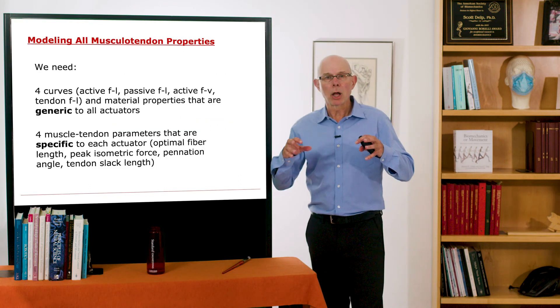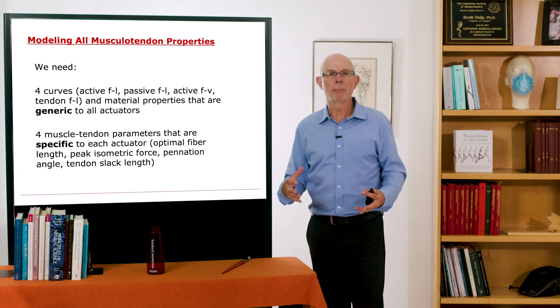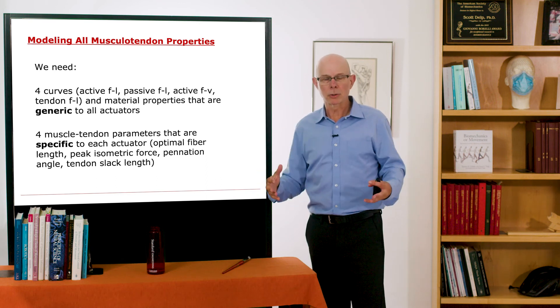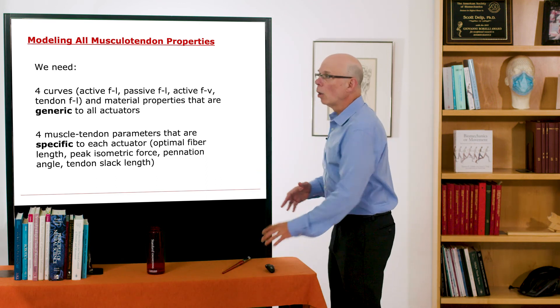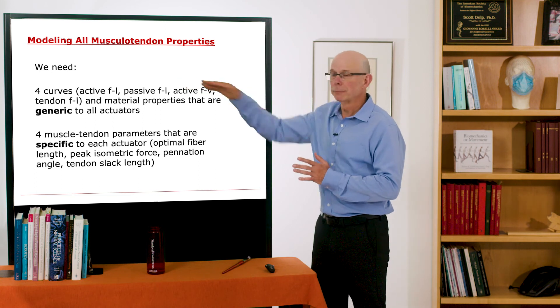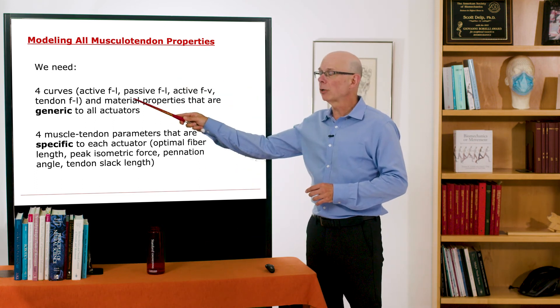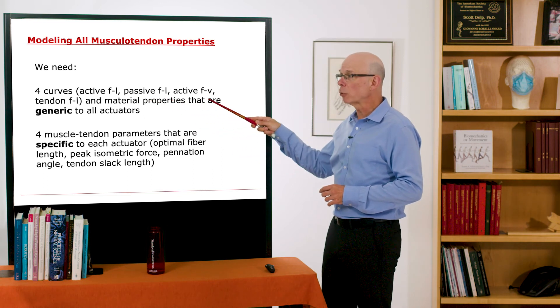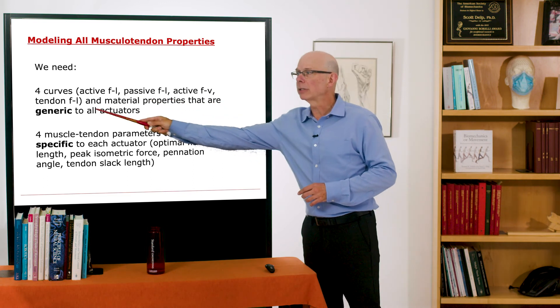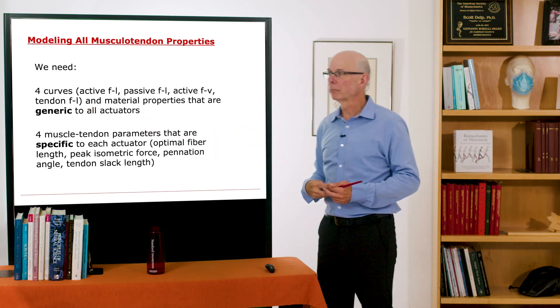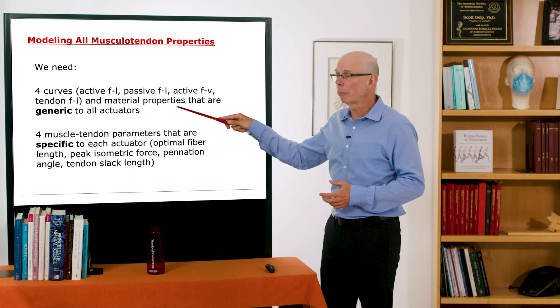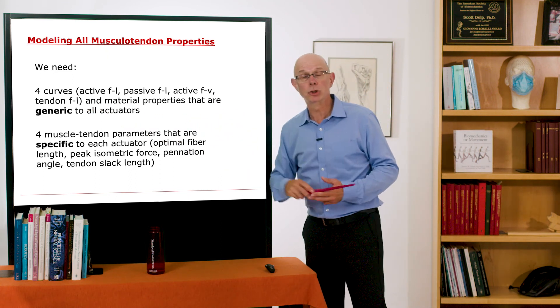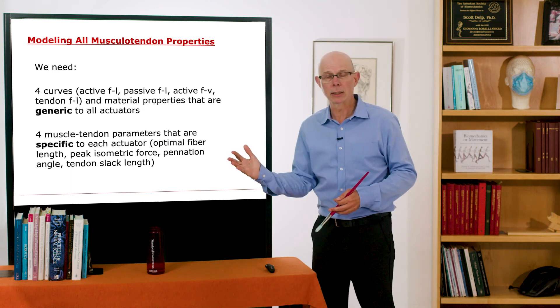So if we want to model all muscle tendon properties for any muscle, what do we need to know? We need 4 curves. The active force length curve of muscle, the passive force length of muscle, the active force velocity curve, and the tendon force length curve. We also need the material properties that are the same, that are generic, for all muscle tendon actuators.